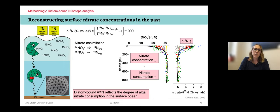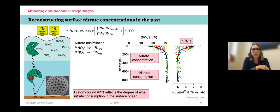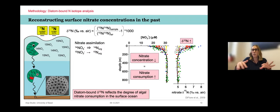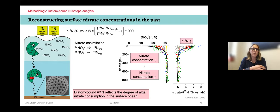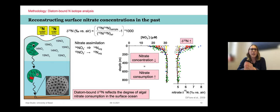The advantage of measuring the nitrogen isotope in fossil diatom shells is that it avoids problems that arise when measuring bulk sediment δ15N. In the past, researchers measured the bulk δ15N of the sediment, but that can be biased by nitrogen input from land and by diagenetic alteration. Measuring the nitrogen isotopic composition of diatom shells avoids problems related to diagenetic alteration and external nitrogen input.